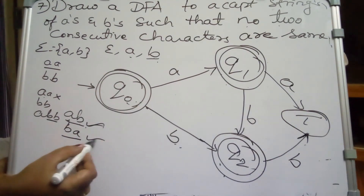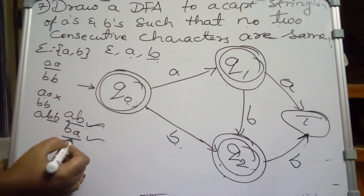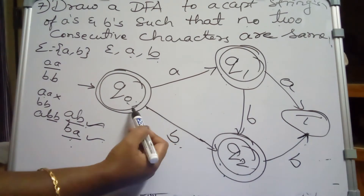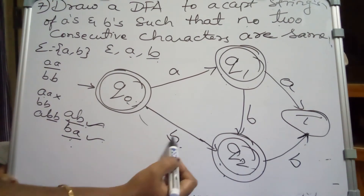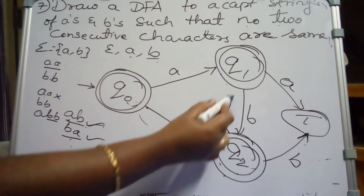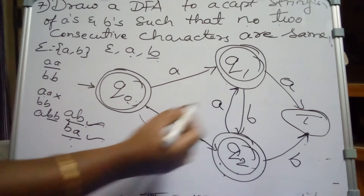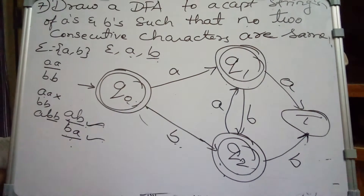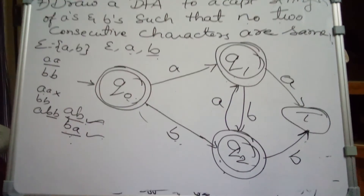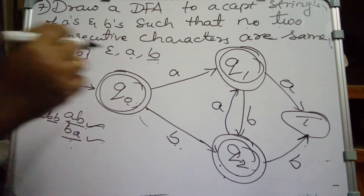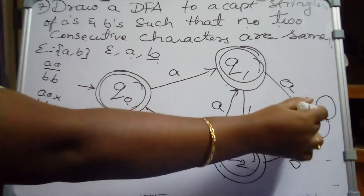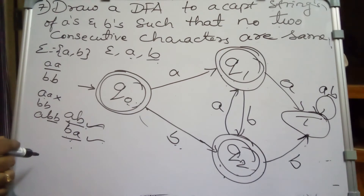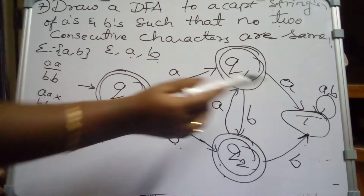The next minimal string BA also has to be accepted. From Q0 on B it comes to Q2, and if the next input is A the string BA must be accepted, so Q2 on A goes to the final state Q1. The trapped state has self-loops on both A and B.